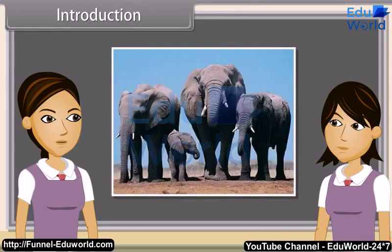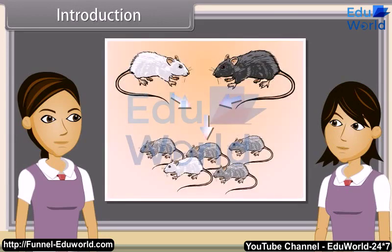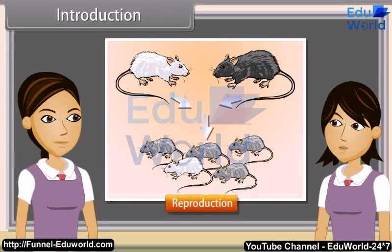We know that reproduction is the ability of all organisms to produce young ones similar to themselves in most of their characters. We can also say the process by which a species is continued is called reproduction.